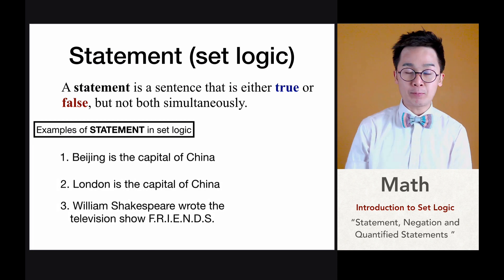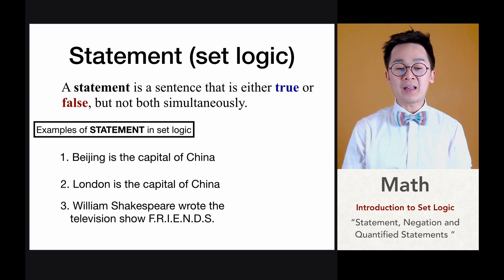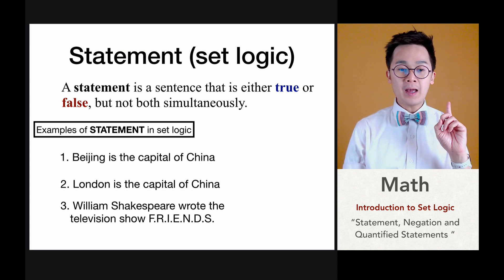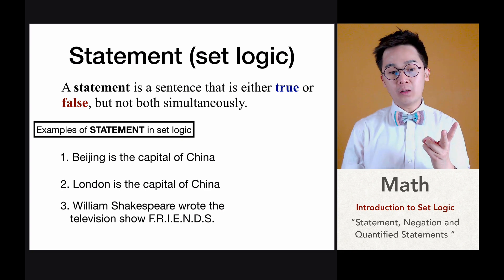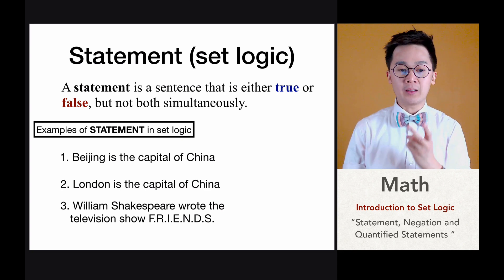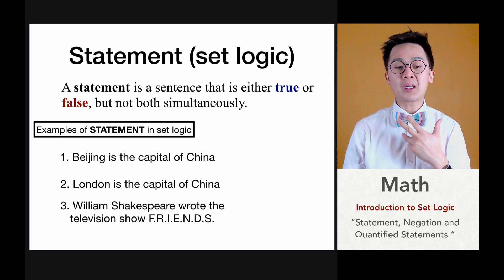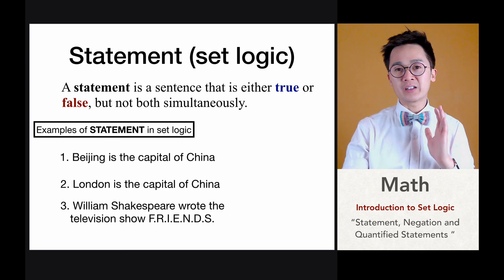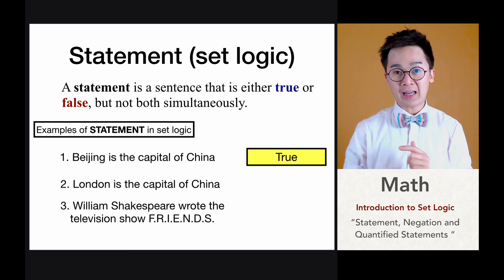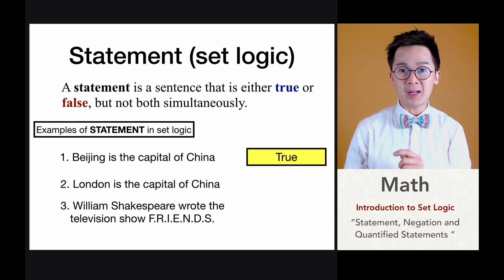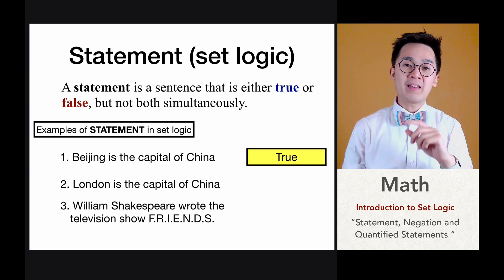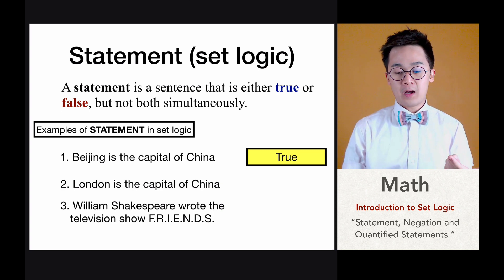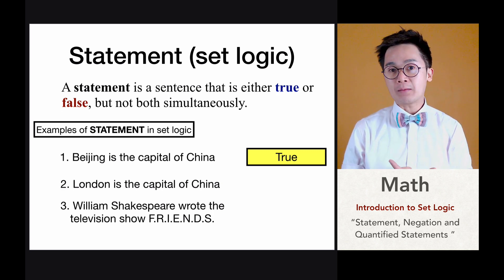Here are some examples of valid statements in set logic. Number one: Beijing is the capital of China. Number two: London is the capital of China. We all know that Beijing is the capital of China, so that is a true statement, and a true statement is a valid example of a statement in set logic.